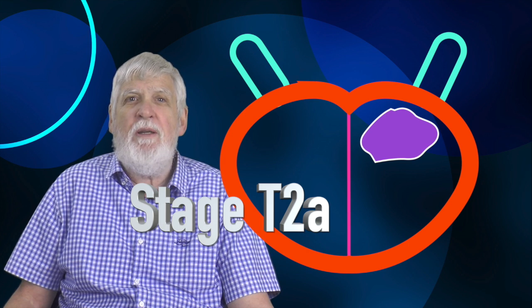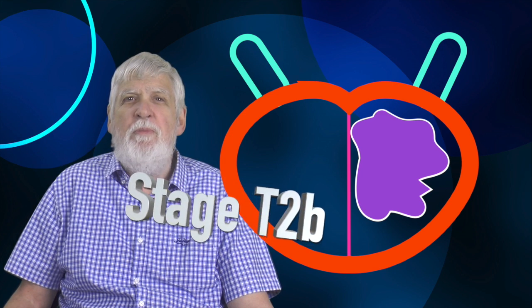Here's our next one. The cancer is completely inside the capsule. The cancer is completely inside one lobe. The cancer takes up more than half of the lobe. This is called a T2B cancer.